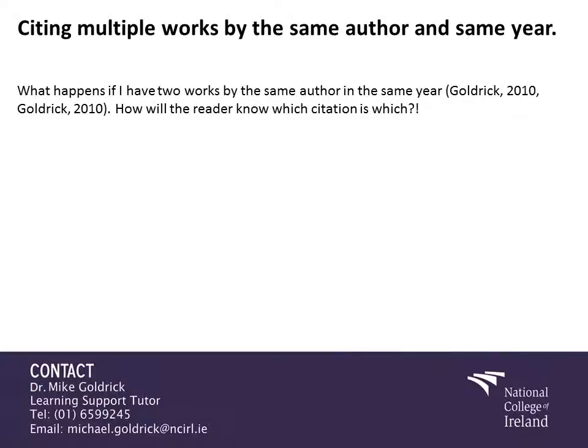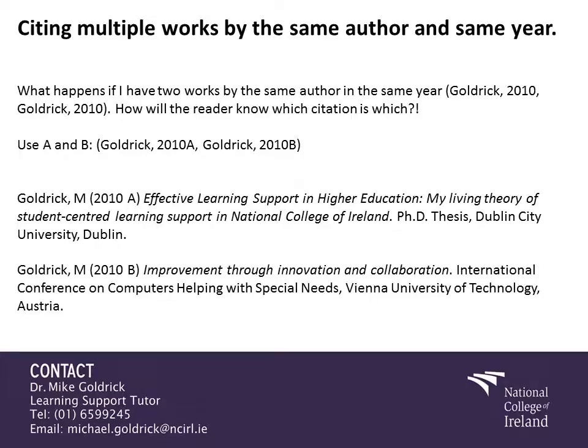Moving on to the concept of citing multiple works by the same author in the same year — another tricky area. What happens if you have two works by the same author in the same year? For instance, Goldrick 2010 and Goldrick 2010 — how will the reader know which citation is which? Traditionally, we use the alphabet A to Z, and in this case we can break it down using Goldrick 2010a and Goldrick 2010b. Your in-text reference should be replicated in your actual bibliography: Goldrick M. 2010a, my PhD thesis, and Goldrick M. 2010b, a conference in Vienna. So we can distinguish the two through using alphabetical designations. Generally speaking, you're not going to have too many instances above A and B — you may have A, B, and C — but traditionally you won't have more than that.